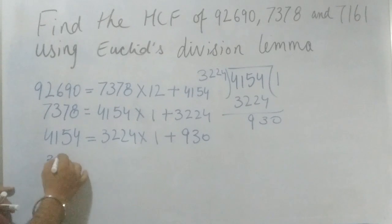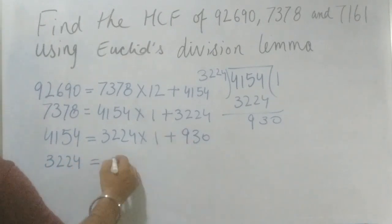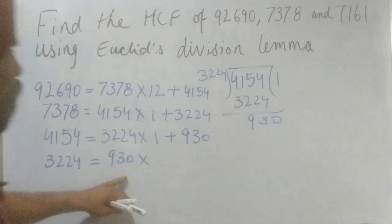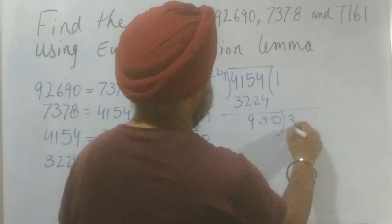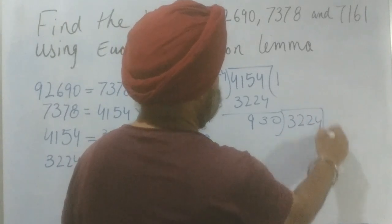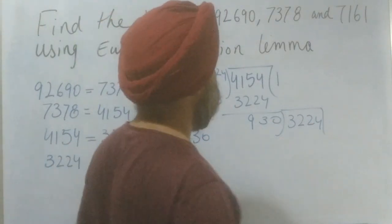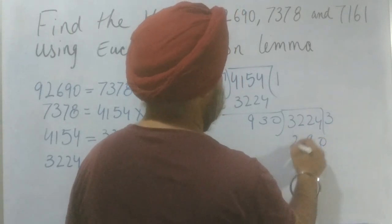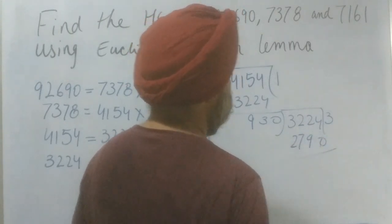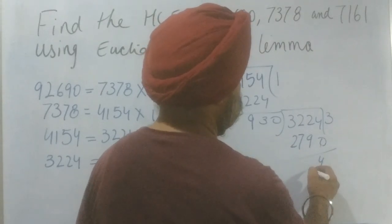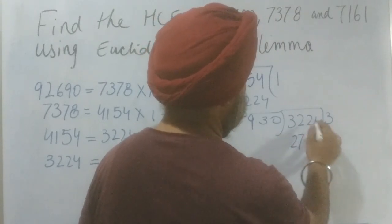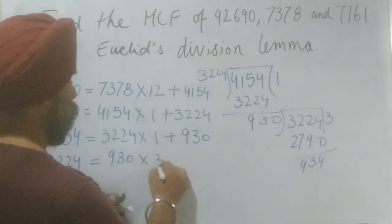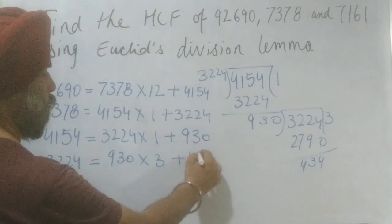Now this is our dividend and 930 will be the divisor here. So let's take it. 3224 we have to divide it. So hopefully it will be going by 3. So 0, 9, and 27. So here is our remainder. It is 4, 12, 3, and 11, and it is 434. So this is 3 plus 4, 434.